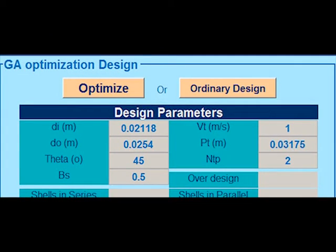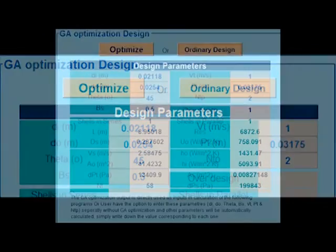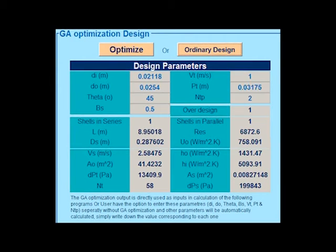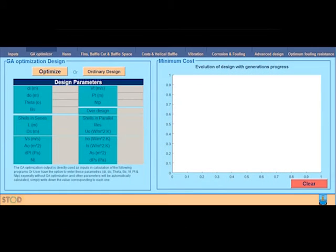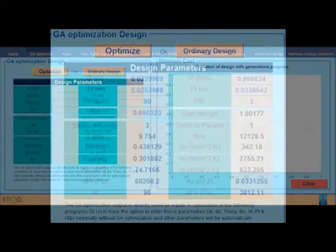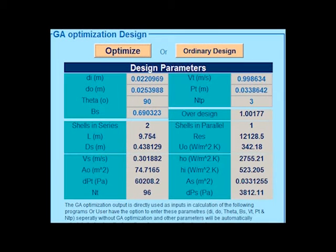Here, the designer should enter whether either of the streams should be considered as a corrosive fluid. If he wants to make utilization of the allowable pressure drop, he can choose which stream he wants to make utilization of, and how much utilization should be made.